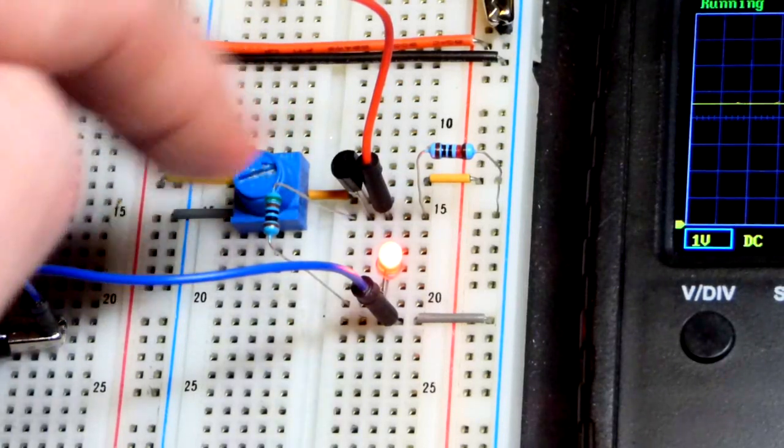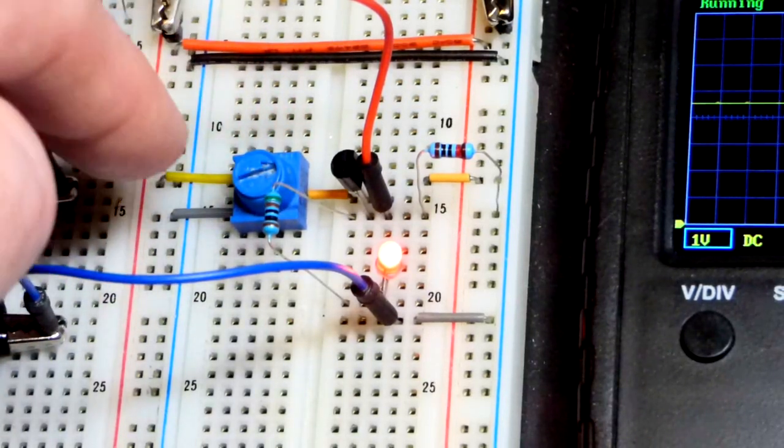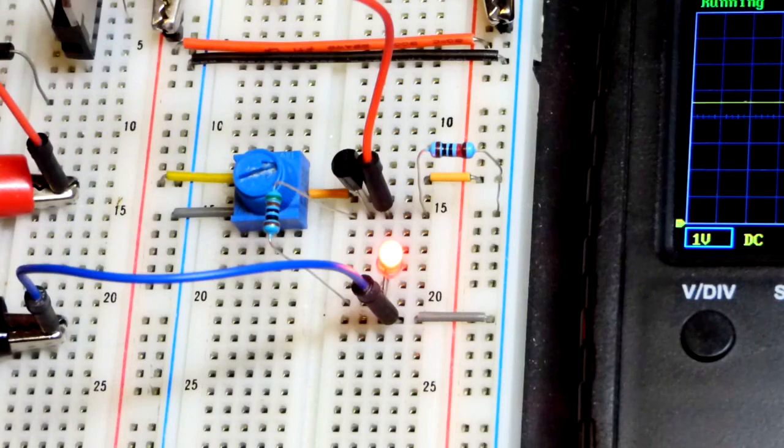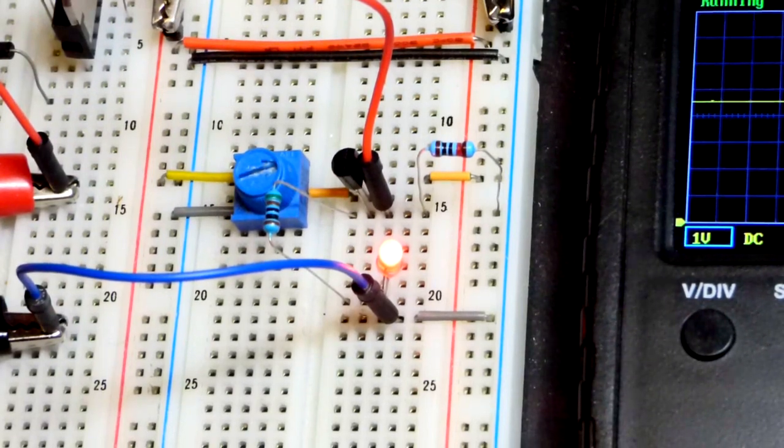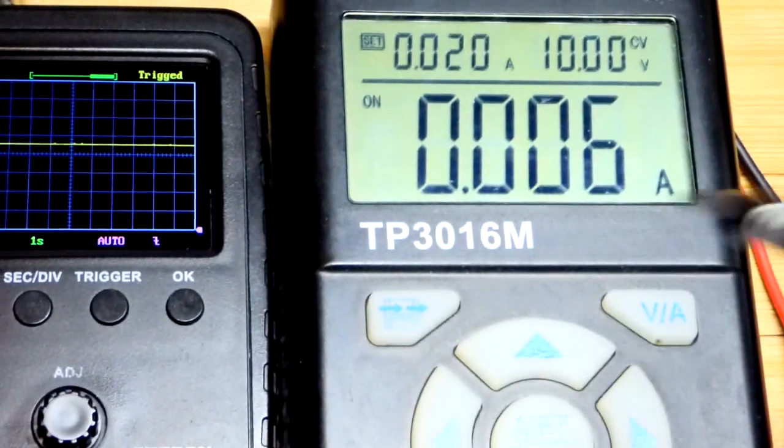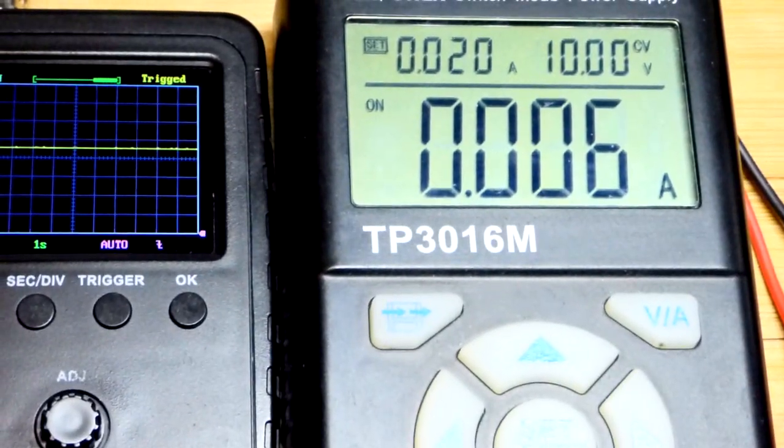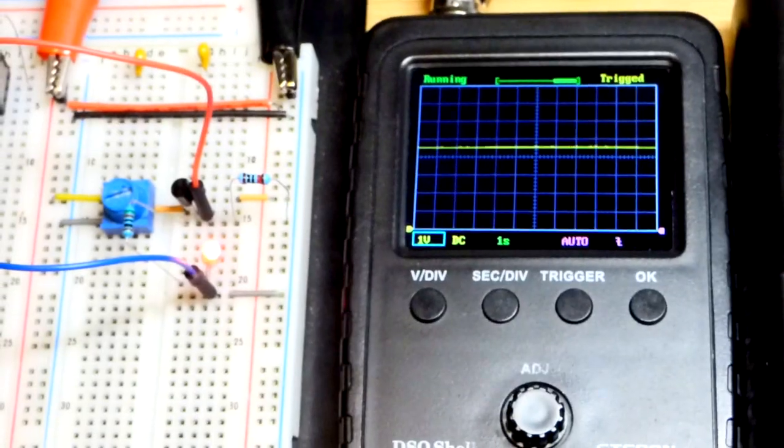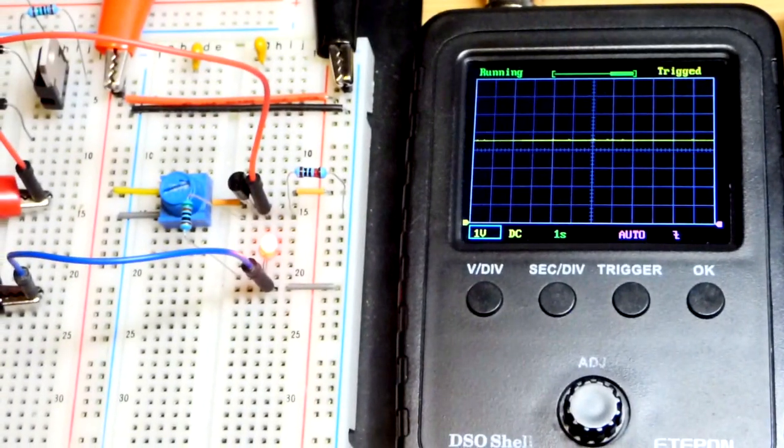And there you can see we have 1, 2, 3, 4. It looks like 4.5 across both of them right there. So now, we should have about 5 milliamps flowing through there. But you can also see that there's that voltage across that 10 kiloohm resistor.